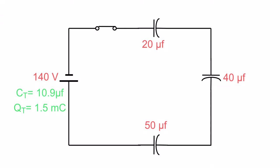The charge is the same the whole way through the circuit. If I have a total charge of 1.5 millicoulombs, that means this capacitor will have a charge of 1.5 millicoulombs. This guy will have a charge of 1.5 millicoulombs, and this guy will have a charge of 1.5 millicoulombs.